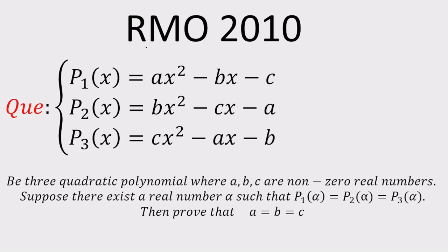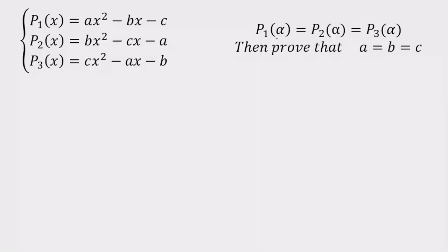Hello everyone. In today's lecture I am going to solve a RMO problem which was asked in the year 2010. First I am going to explain the question. The setup is: we have given three quadratic equations P1(x), P2(x), and P3(x), which are composed of A, B, C — non-zero real numbers. There exists an alpha such that P1(alpha) = P2(alpha) = P3(alpha), and we need to prove that A = B = C. So let's start.